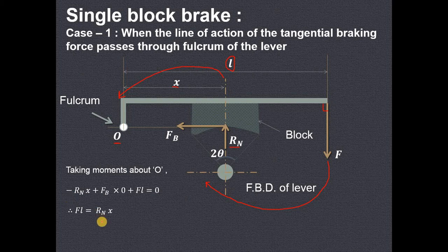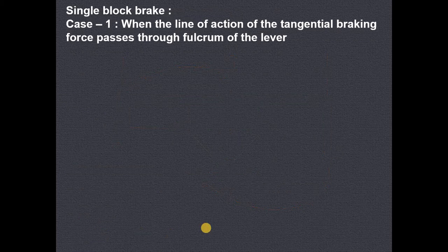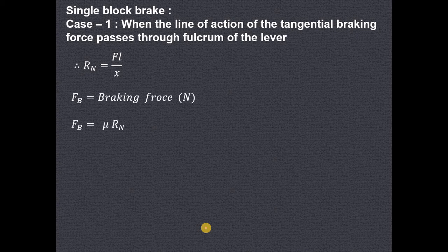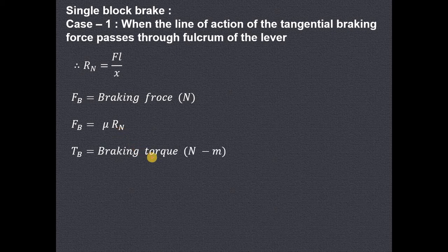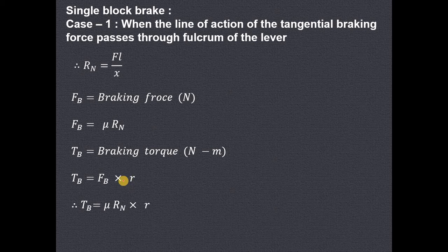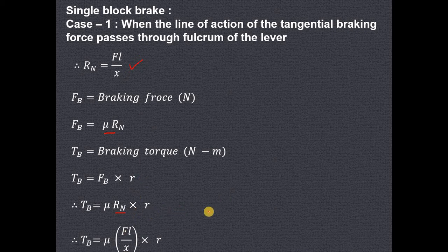Transferring the negative term to the other side, we get the value of normal reaction: Rn equals F times L divided by X. We know that braking force FB equals mu times Rn, and torque is braking force times radius R. Substituting: FB equals mu times Rn, and substituting Rn equals FL/X, we get braking torque equals mu times FL divided by X, multiplied by R. This will be the value of braking torque in Newton-meters.